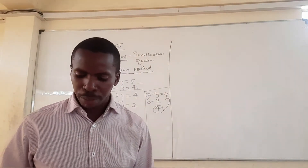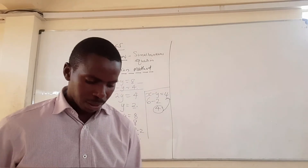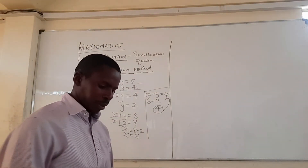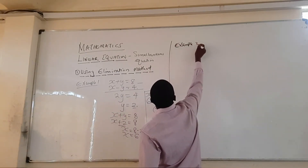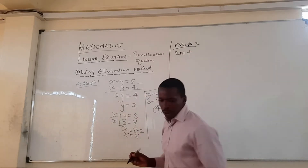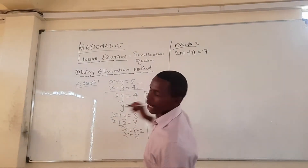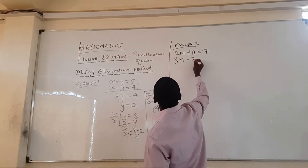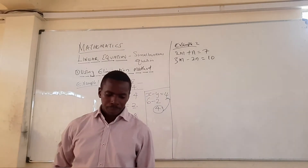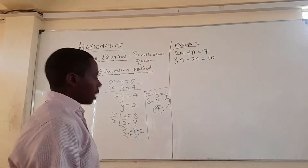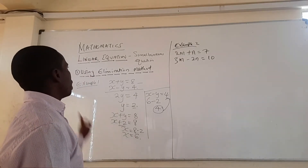Let's look at example two. We have 2m plus n equals 7 and 3m minus 2n equals 10. This is another kind of simultaneous equation and we want to solve it using the elimination method.